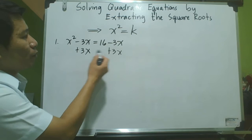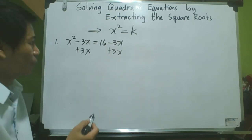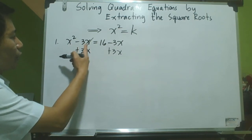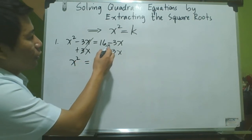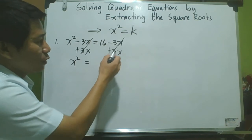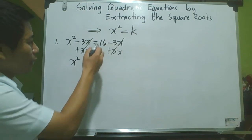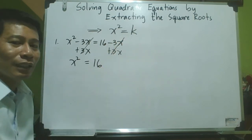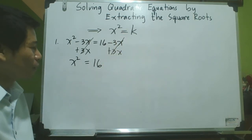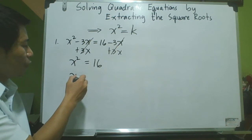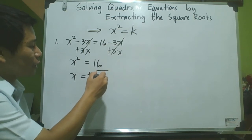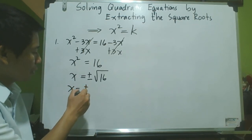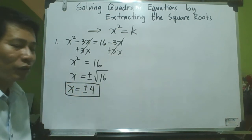If we add 3x to both sides, negative 3x plus 3x cancels on the left, and negative 3x plus 3x also cancels on the right. The resulting equation is x squared equals 16. This is now in the form x squared equals k, so we can solve it by extracting square roots. We get x equals positive or negative square root of 16, which is 4. Therefore, x equals positive or negative 4, and these are our roots or solutions.